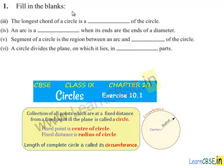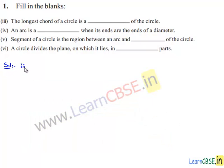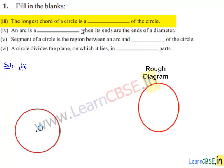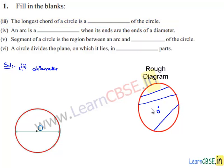Moving on to the third bit: the longest chord of the circle. Let us consider a circle with center O. We know that the longest chord of the circle is the diameter. If we draw a chord between any two points, that will be less than the diameter always. Any chord on the circle other than the line passing through the center will have a length less than the diameter. Therefore, the diameter is the longest chord of the circle.